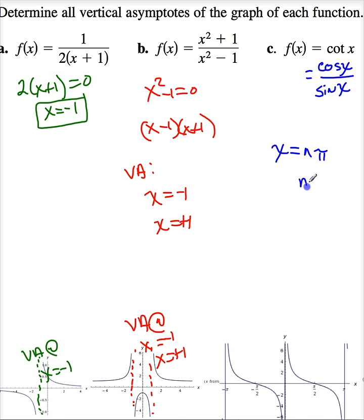where n is 0 plus or minus 1 plus or minus 2 dot dot dot. And lo and behold, that is what we see on our cotangent graph. This one even drew it up for us.